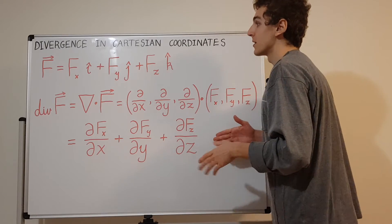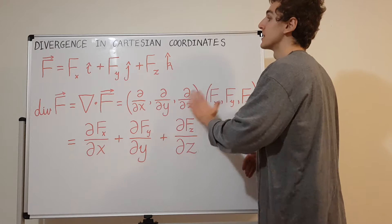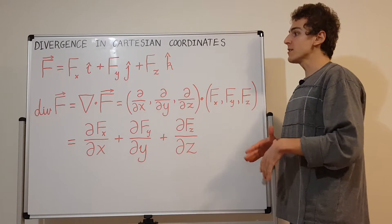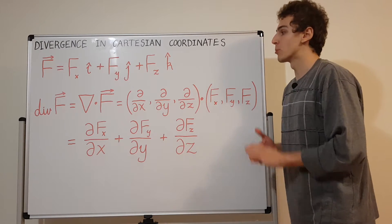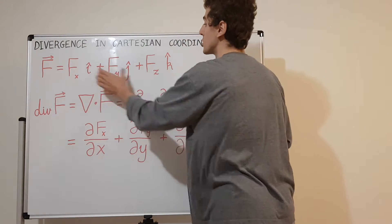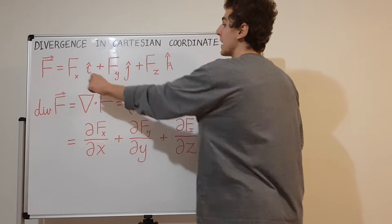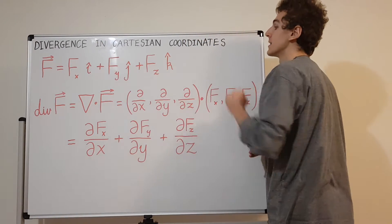Now keep in mind this stuff can also depend on time, but this time dependence is not explicitly shown here. Any vector field F can be broken up into components. You can have Cartesian coordinates and each of these guys are going to be the components: the X, the Y, and the Z component.